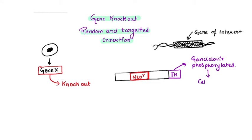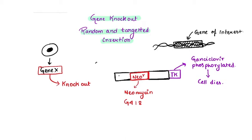Since gancyclovir hinders chain synthesis, the cell dies and cannot survive. That is a brief overview of thymidine kinase. Now, neomycin resistance — as the name suggests — confers resistance towards neomycin and related compounds. One such related compound is G418. If G418 is present in the medium, the neomycin resistance gene confers resistance towards it. Now you have made the construct: the flanking regions are the gene of interest, and this is the whole gene construct.